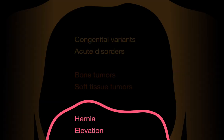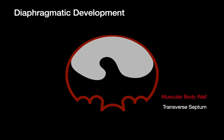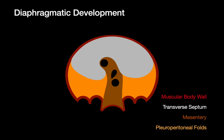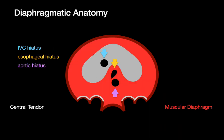It's time to talk about diaphragmatic disorders, starting with how the diaphragm develops during embryogenesis. The diaphragm develops from three elements: the transverse septum, mesentery, and the pleuroperitoneal folds. The central tendon of the diaphragm is derived from the transverse septum, while the muscular diaphragm arises from the pleuroperitoneal folds, mesentery, and muscular body wall.